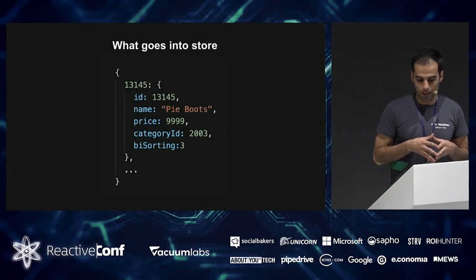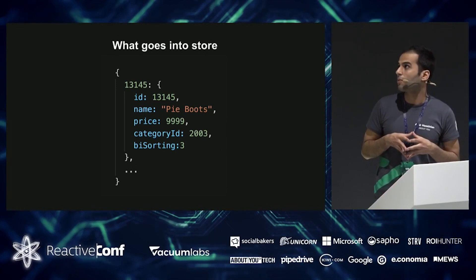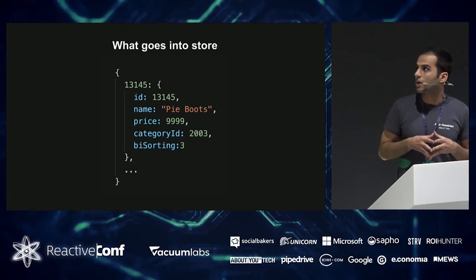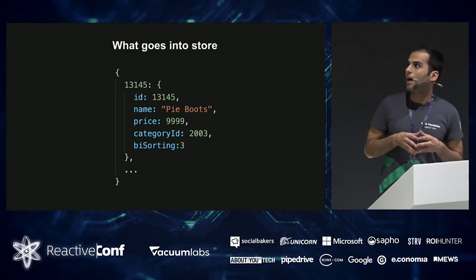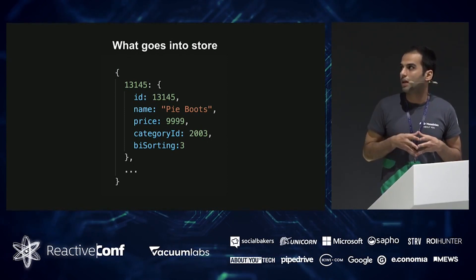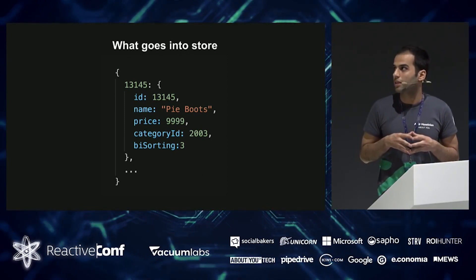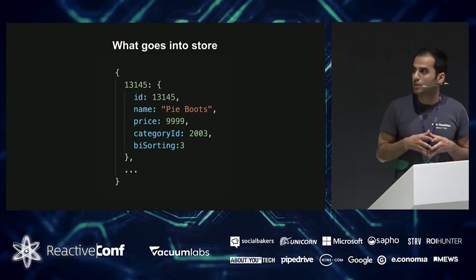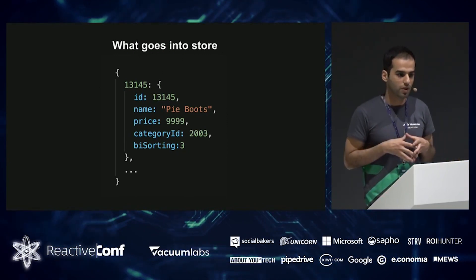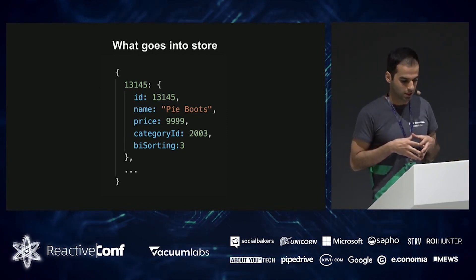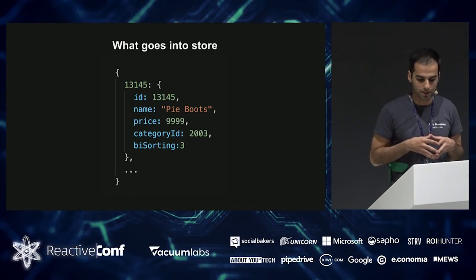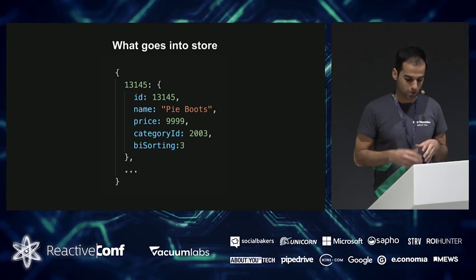Here is an example of that. We have our products categorized by product ID, and they also have category ID and sorting on them automatically. This would be the only thing our developers work with on the front-end, instead of having to work with three different data sources.